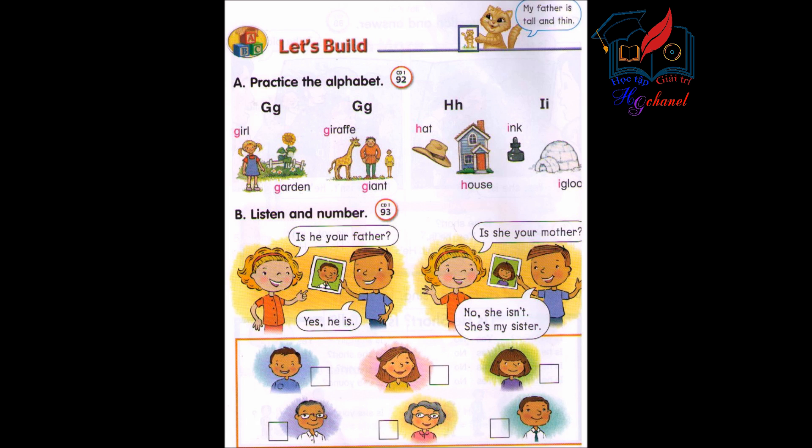Track 93. B. Listen and number. Is he your father? Yes, he is. Is she your mother? No, she isn't. She's my sister.